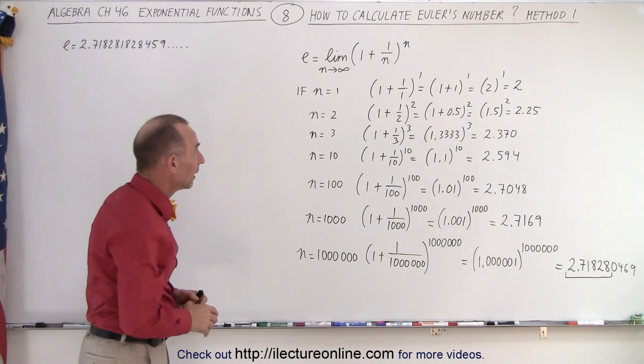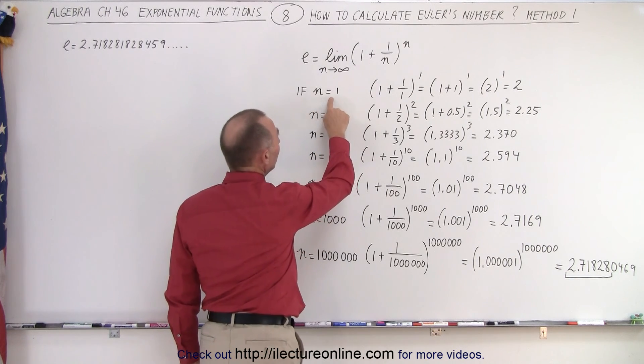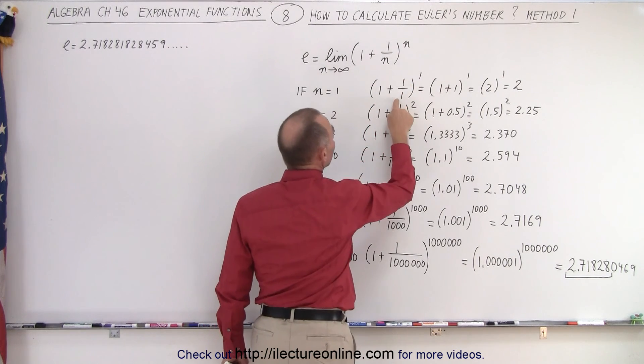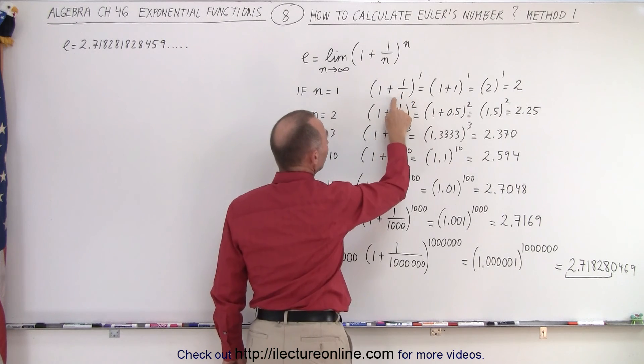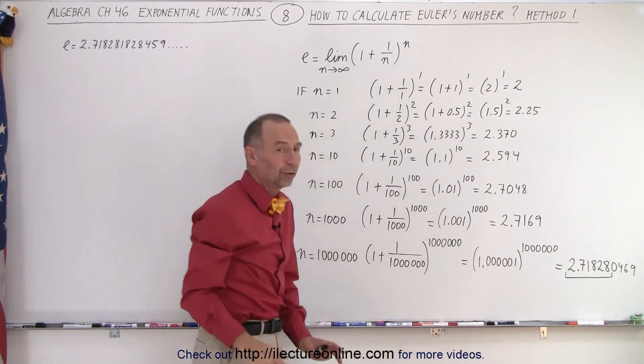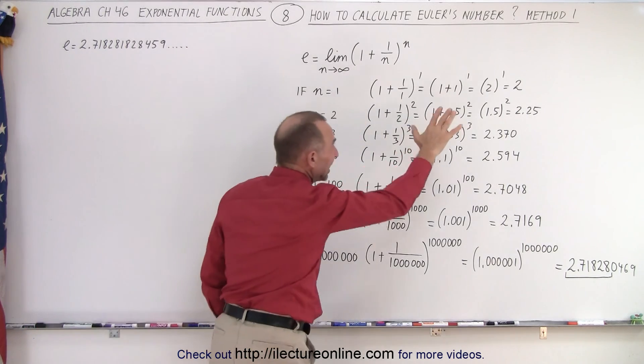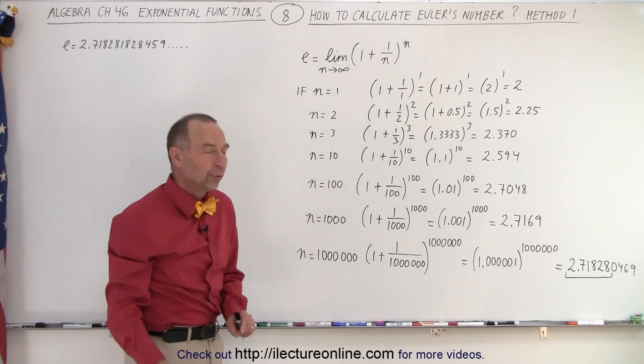So let's try some numbers. Let's try what happens when n equals 1. Well, when n equals 1, we replace every n by 1, so we get 1 plus 1 over 1 to the first power, which is essentially 2 to the first power, or 2. So you can see that the number is 2.718 and so forth, so we're not really that close when n equals 1.